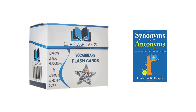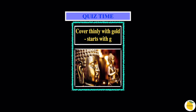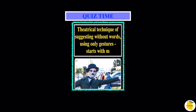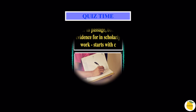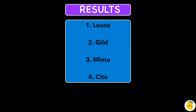Quiz question 1: wingless parasitic insects that live on mammals — starts with L. In this picture we can see a parasitic insect living on someone's hair. Question 2: covered thinly with gold — starts with G; a golden Buddha pictured. Question 3: theatrical technique of suggesting without words using only gestures — starts with M; Charlie Chaplin pictured. Question 4: refer to a passage or book as evidence in scholarly work — starts with C; someone writing in a diary pictured.